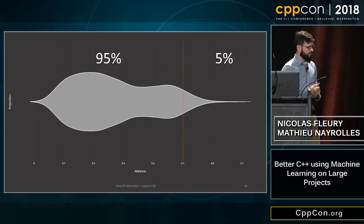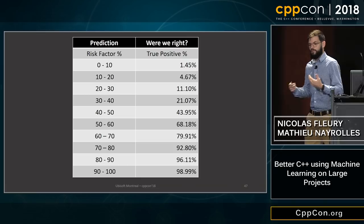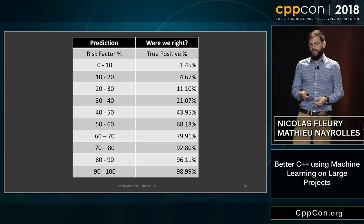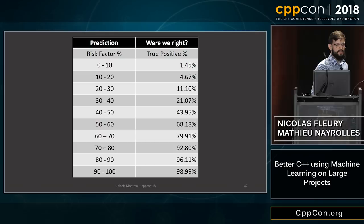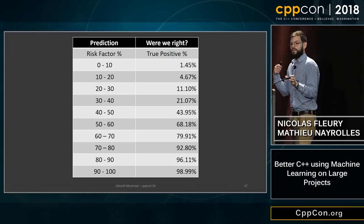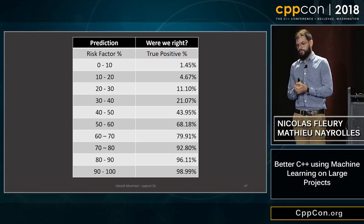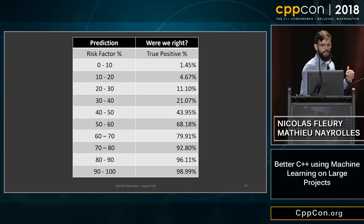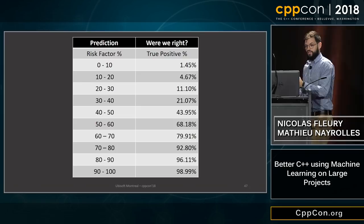We didn't choose the 50% threshold arbitrarily. Looking at the effectiveness of each riskiness range: between 0% and 10% riskiness, a commit introduces a bug on average in 1.45% of cases. But in the 50% to 60% riskiness range, there is a 68% chance of actually introducing a bug.